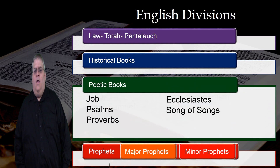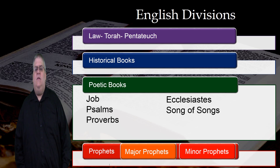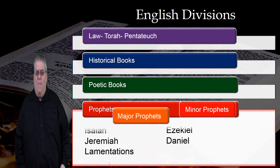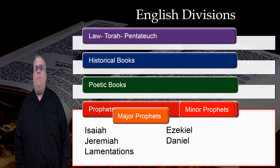The poetic books are Job, Psalms, Proverbs, Ecclesiastes, and Song of Solomon. The major prophets are Isaiah, Jeremiah, Lamentations, Ezekiel, and Daniel.